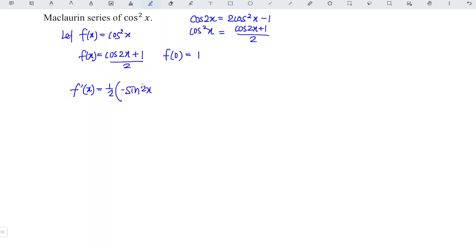So negative sine 2x. And we differentiate the inner function. Differentiate 2x, we should obtain 2. Differentiate 1, obtain 0. So 1 over 2 times 2, so become negative sine 2x. At the point 0, sine 0 is equal to 0.